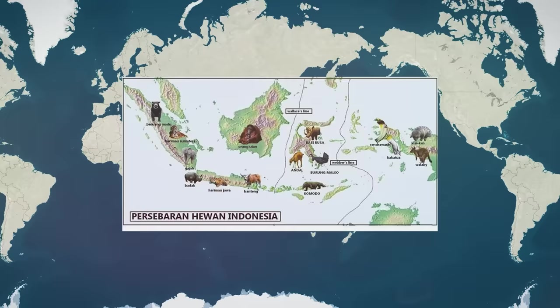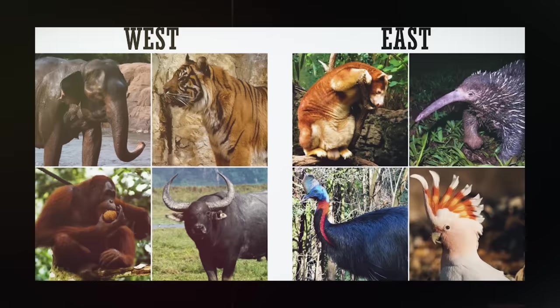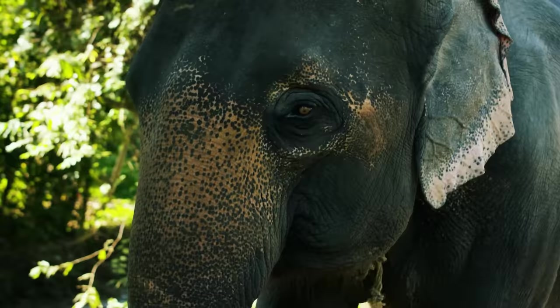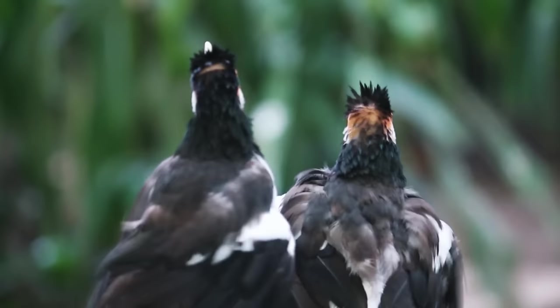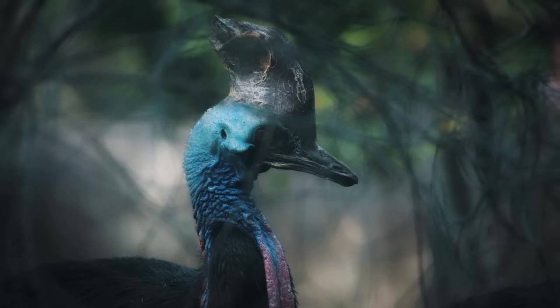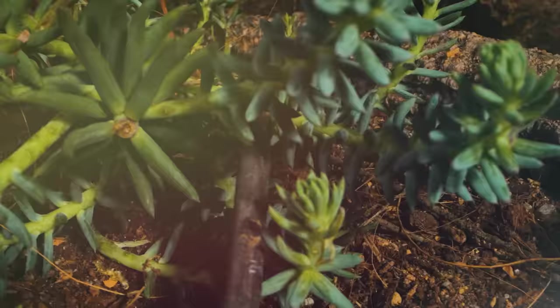The Wallace Line is an imaginary border that separates the ecozones of Asia and Australia, passing between Bali and Lombok. To the west, the fauna is more similar to that of Asia, while to the east, the fauna is more akin to Australia. The division is not only based on geography, but also on the types of species found, particularly mammals and birds.